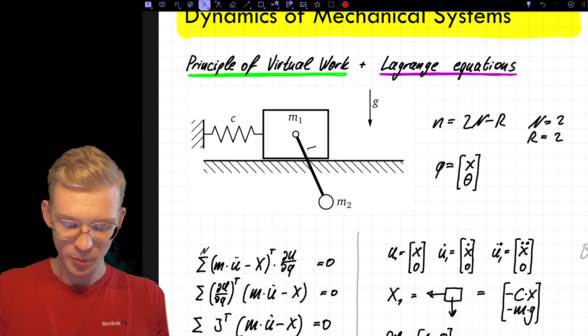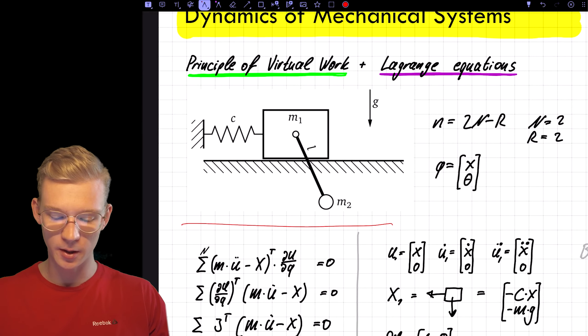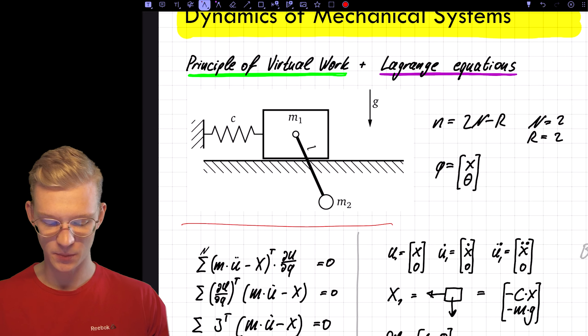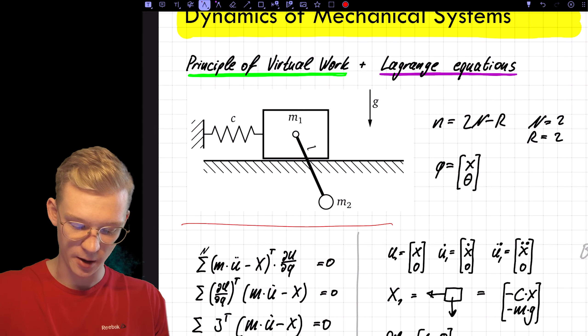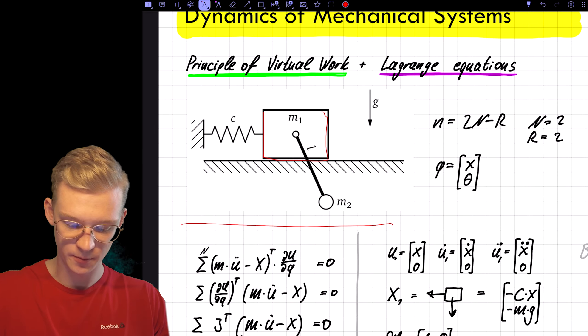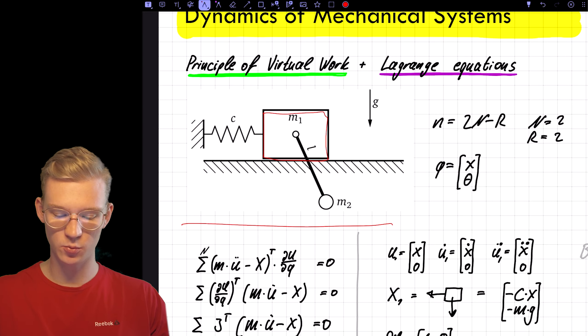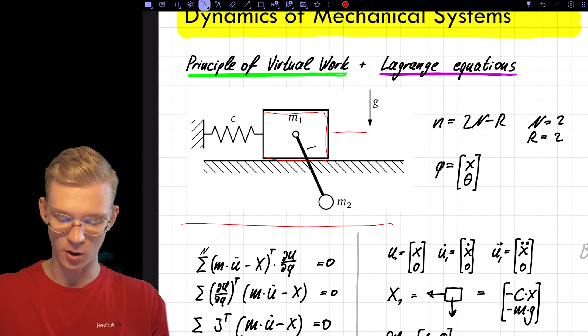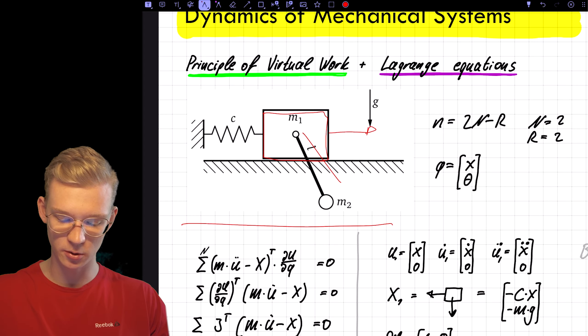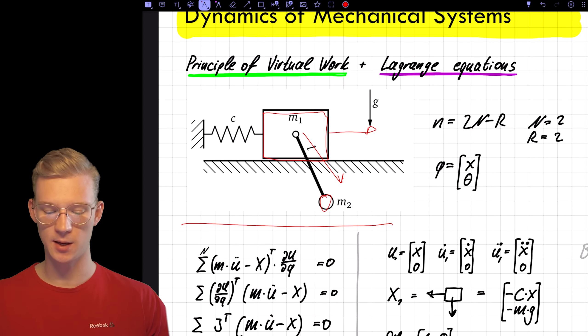We will be focusing on this system. We have a square that is moving on a plane and a pendulum attached with a point mass at the end.